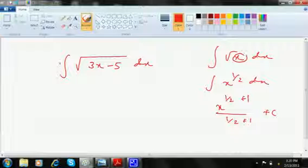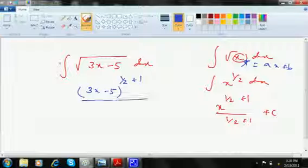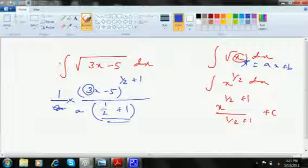Now the x has become a star, what I say to be ax plus b. So this is 3x minus 5 to the power 1 by 2 plus 1 divided by 1 by 2 plus 1, and this a will only get divided extra. We can make it out as 1 by a. So it's better to write 1 by a here because there are two, I mean 1 by 2 plus 1 there is a term like that and it may get confused.